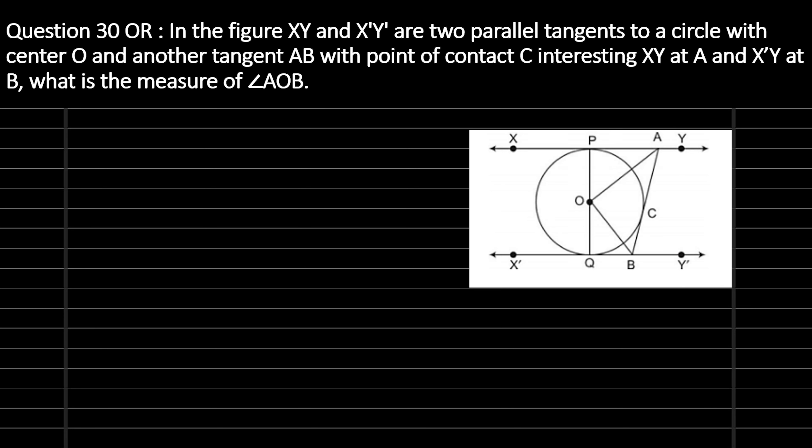Question number 30. In the figure, XY and X'Y' are two parallel tangents to a circle with center O, and another tangent AB with point of contact C intersects XY at A and X'Y' at B. What is the measure of angle AOB? We have to find out the measure of angle AOB.